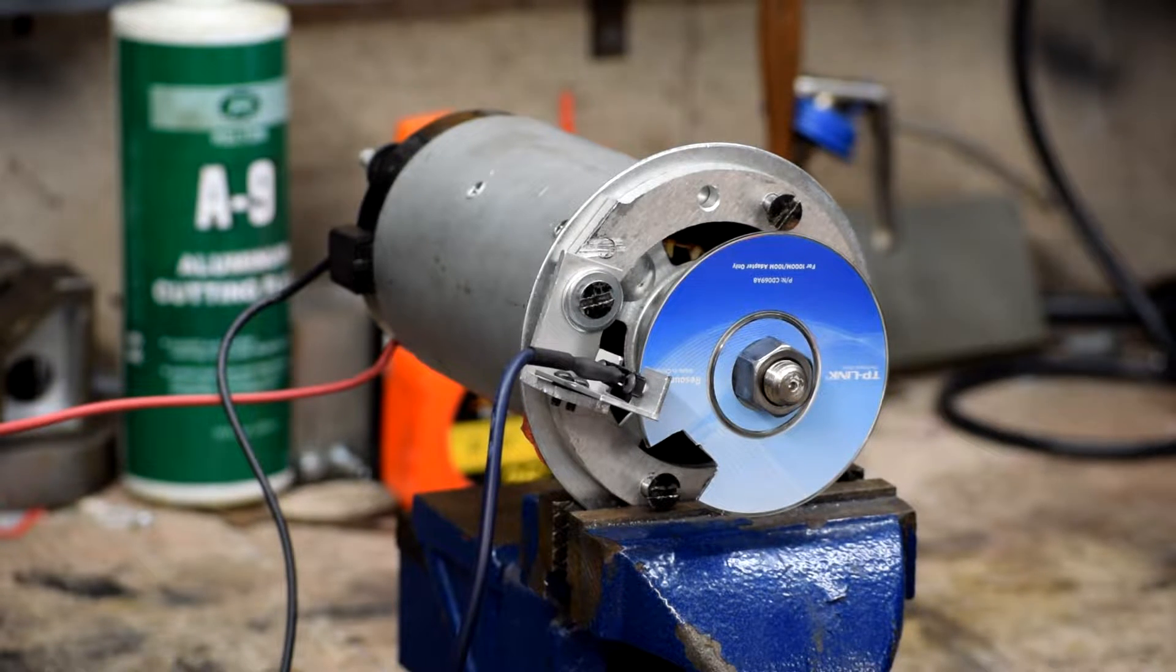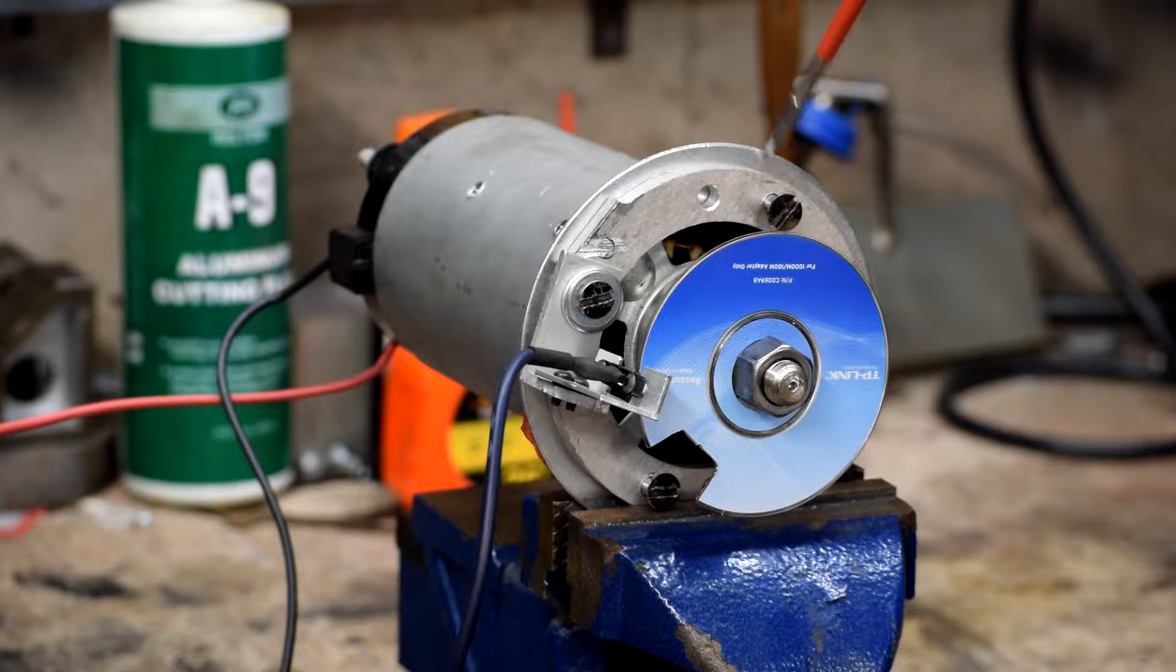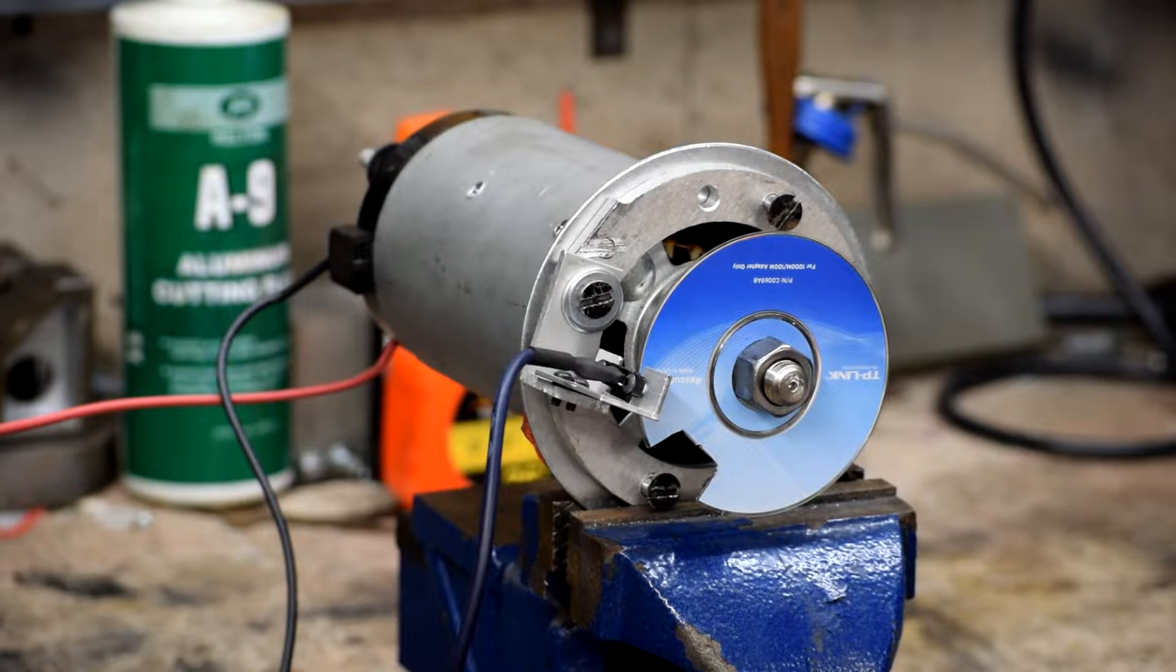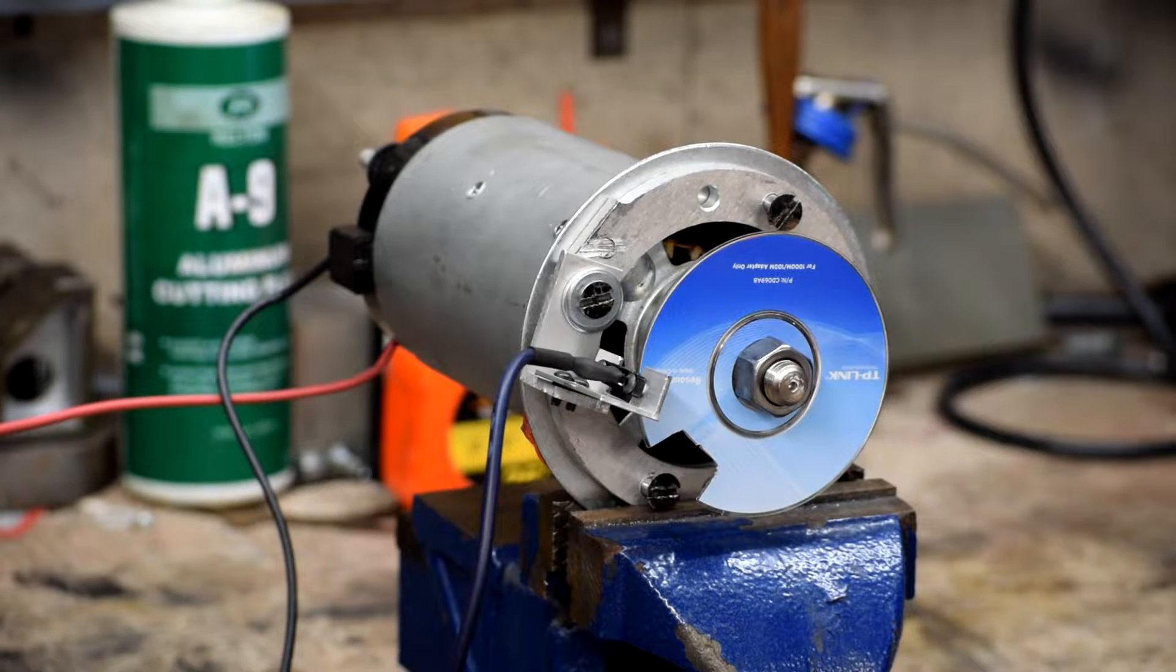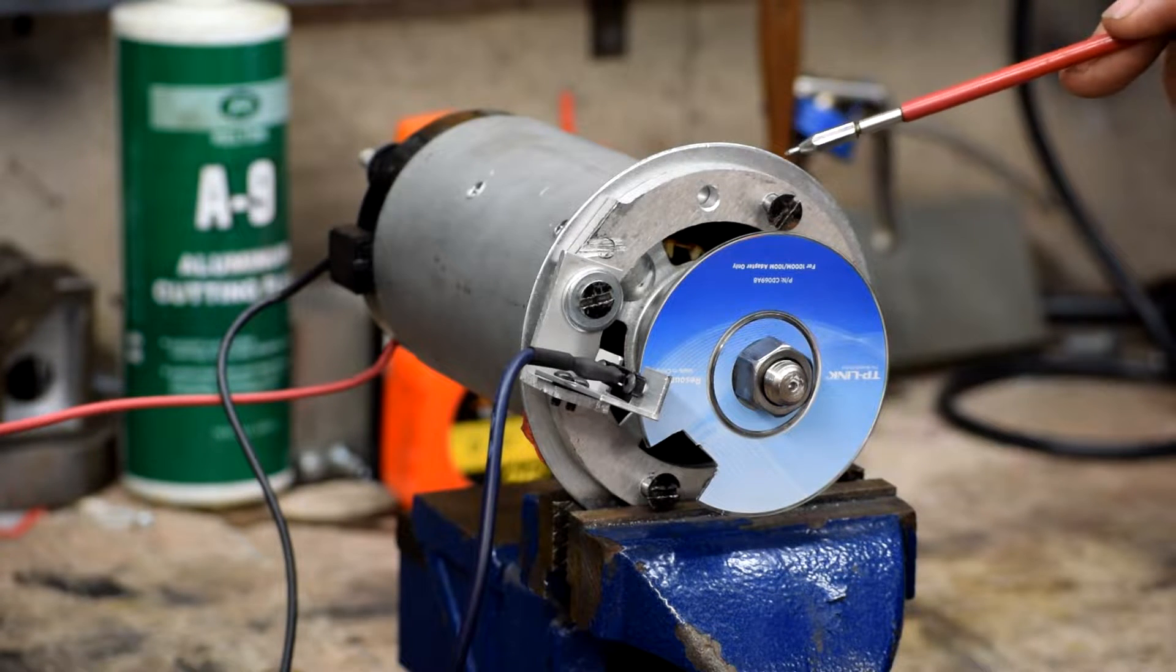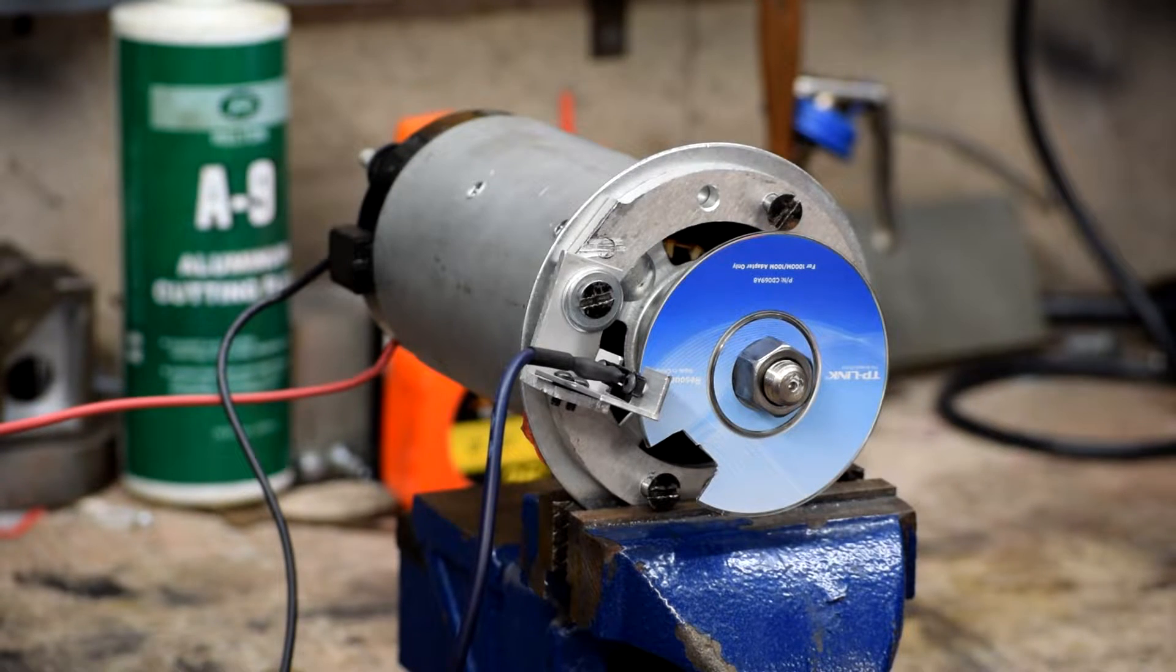The second part is this aluminum ring right here that I cut on the x-carve. It takes the metric motor face which uses these bolts right here to attach to the lathe headstock and adapt it to this flange here on the motor. And it was a little bit closer than I liked. I should have actually made the diameter bigger because I had to grind away a little bit of the motor housing. But that's what prototypes are for.